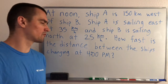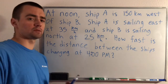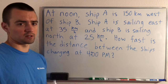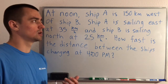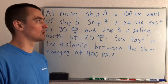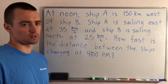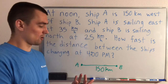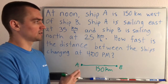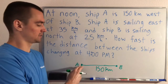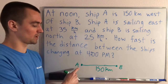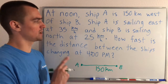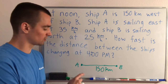First of all, let's think about where the ships start. Obviously these ships are moving throughout time, but the problem tells us at noon, ship A is 150 kilometers west of ship B. So that's really all we're given at this point — this is their position at noon.